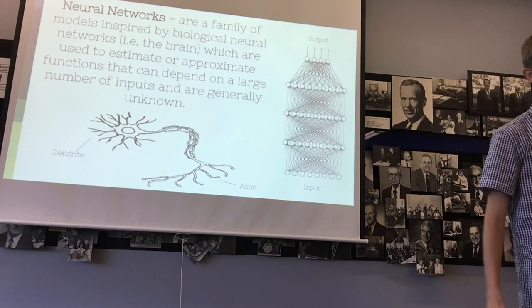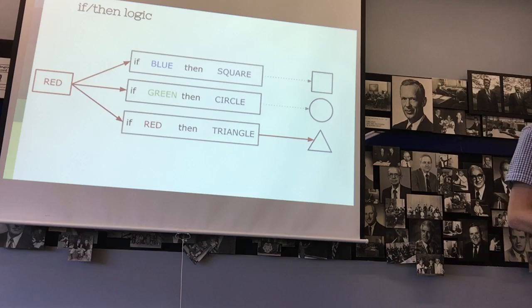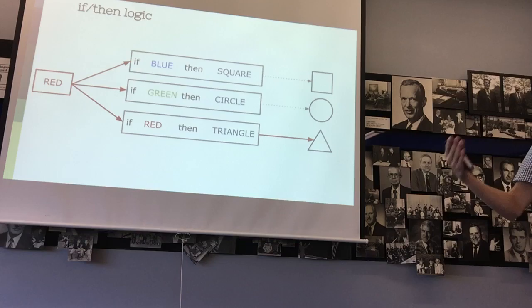So, just to take a step back and explain why neural networks are so important. The way that these programs are written is a very simplified if-then logic. So, if this certain clause is true, do this. And here you can see just an abstract example of this program. If you have blue, then output square. If you have green, then output circle. And if you have red, output a triangle.